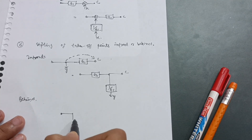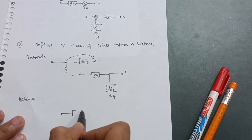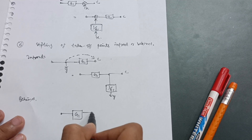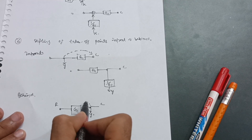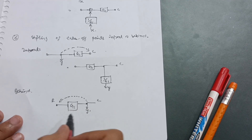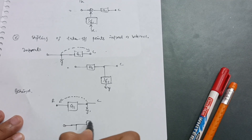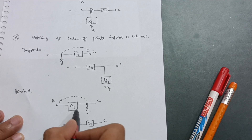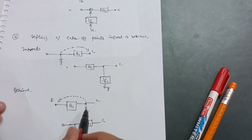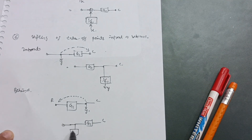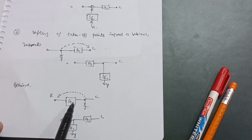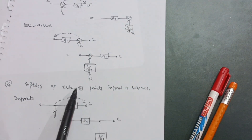For the behind case of takeoff points: suppose you have block G1, a takeoff point after it, output C, and reference input. When you shift the takeoff point behind G1, you keep G1 and output C as they are. If you are shifting the takeoff point behind the block, you add the block value G1 with the same signal Y.